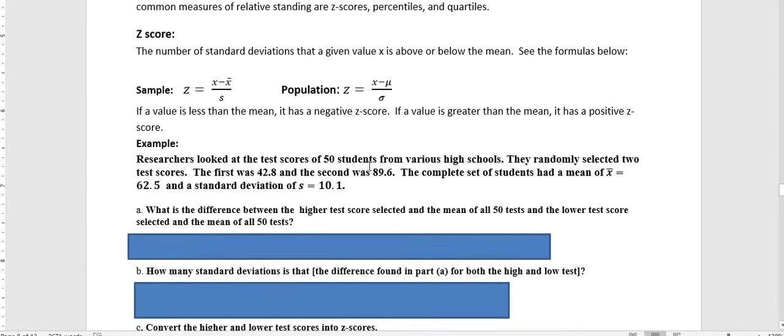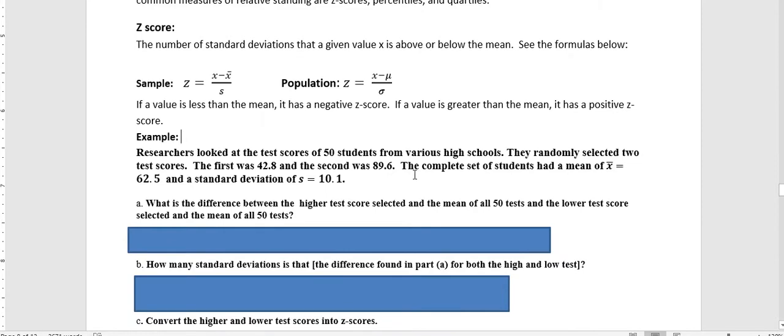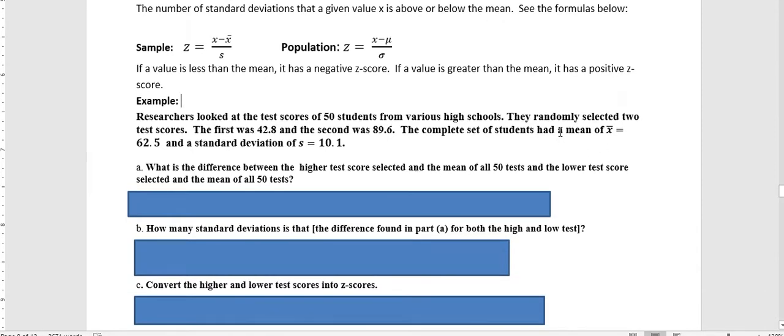Here's an example. Researchers looked at the test scores of 50 students from various high schools. They randomly selected two test scores, the first was 42.8 and the second was 89.6. The complete set of students had a mean of 62.5 and a standard deviation of 10.1.